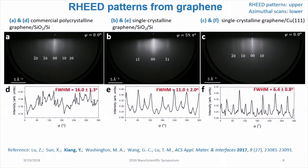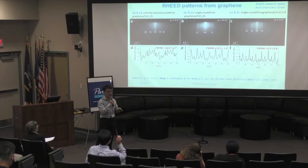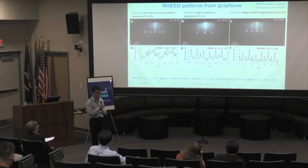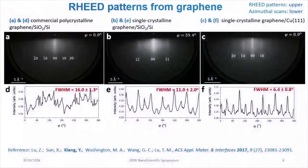The second feature is that if you observe carefully, the streaks in figure C are the sharpest, while the ones in figure A seem to be the most blurred. To be more quantitative, we measured the azimuthal scan for each of those three samples, shown in figures D, E, and F.